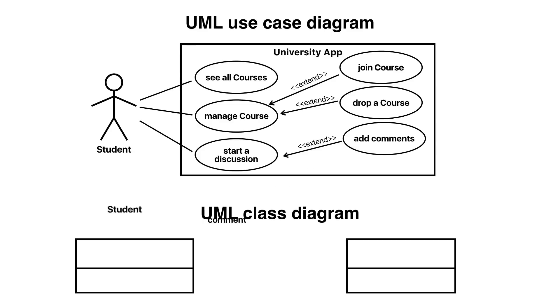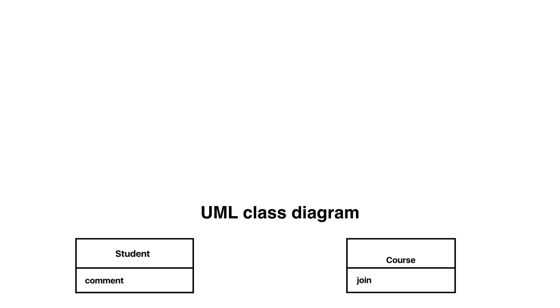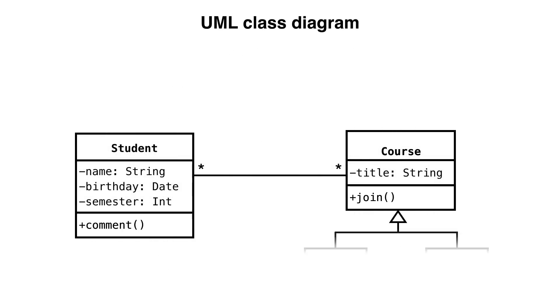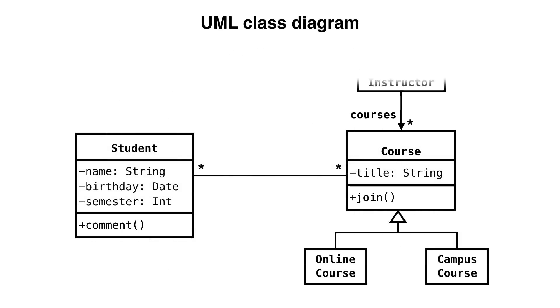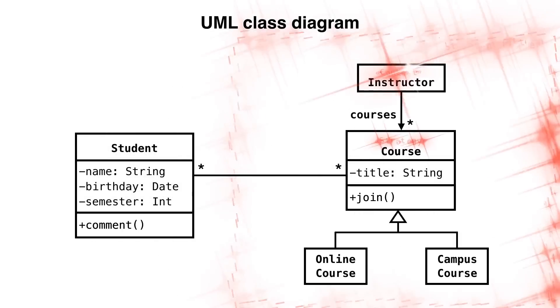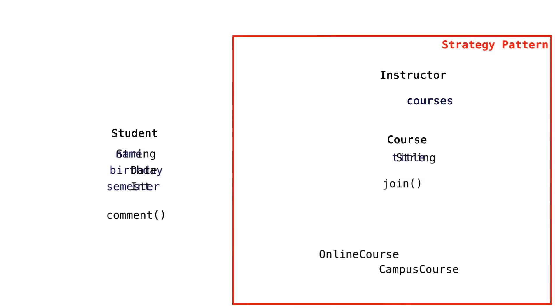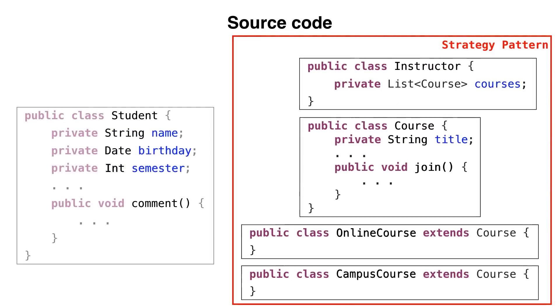You learn how to model multiple representations of the system consistently, to identify design patterns and to map models to source code. Patterns represent common, already proven knowledge and provide a shared vocabulary for your team.